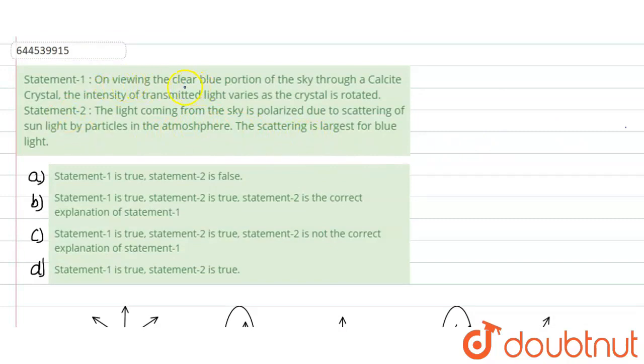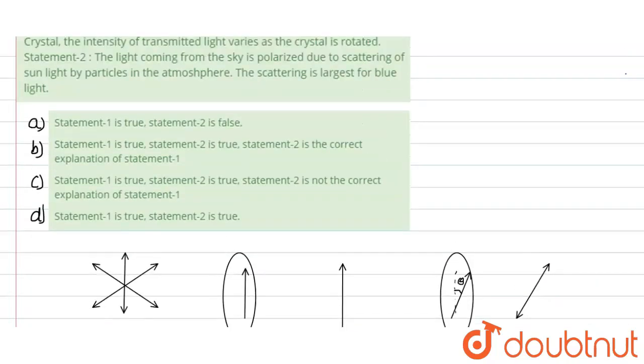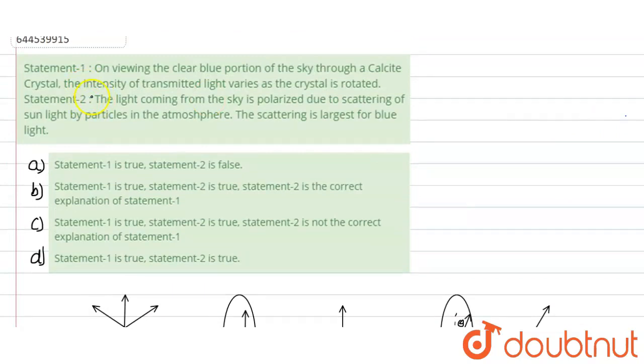Now on viewing the clear blue portion of the sky through a calcite crystal, the intensity of transmitted light varies as the crystal is rotated because it depends upon the angle theta. So if you vary the angle, intensity would be varying. So the second statement and first statement, both are true and this is the correct explanation. So we can say that B is the correct option. Hope you understood the solution.